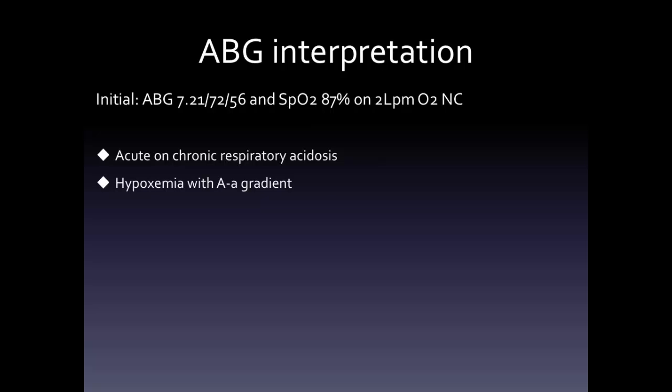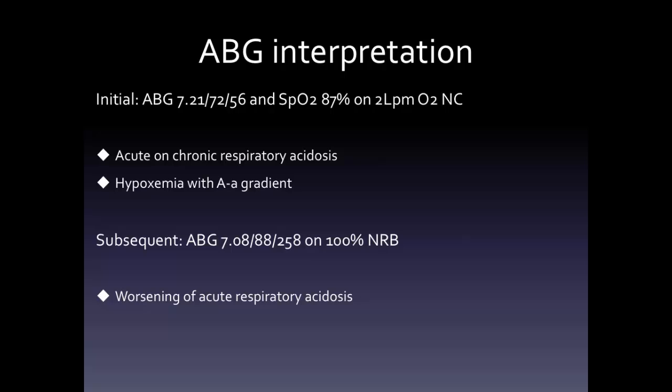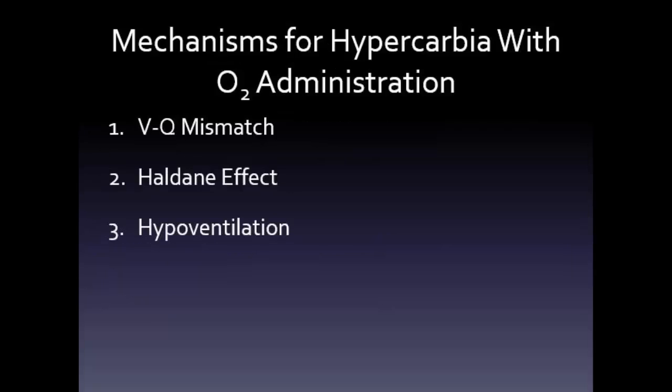You might have been concerned about his hypoxemia, so let's consider what happens if you put this patient on 100% non-rebreather. On 100% non-rebreather, a repeat ABG would show a pH of 7.08, PCO2 of 88, and a PaO2 of 258. Again, this is acidemic and the CO2 is high, suggesting an acute on chronic respiratory acidosis. Because the pH is lower and the CO2 is higher than the initial gas, this is a worsening of the acute respiratory acidosis. The oxygenation side shows improvement of the PaO2 on 100% non-rebreather, so this is a mechanism of hypoxemia that is not a shunt.